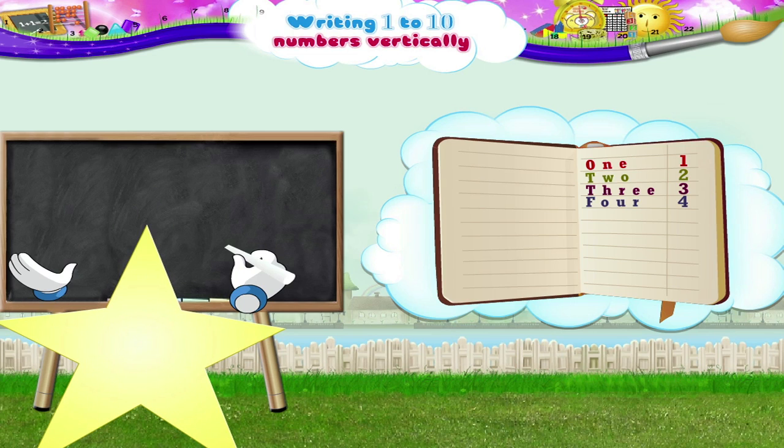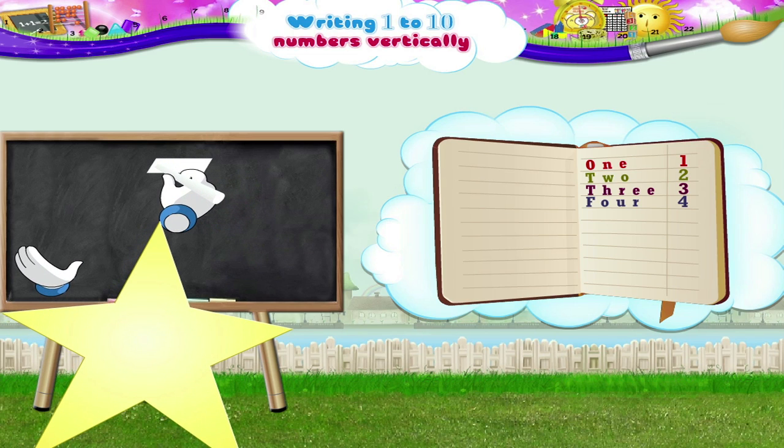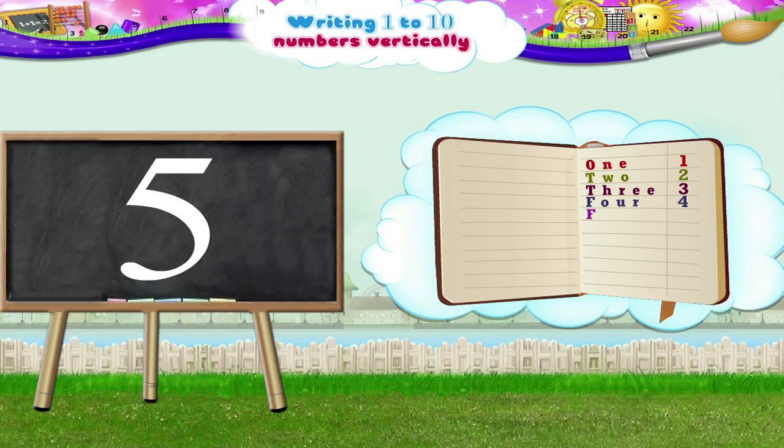And now, the number 5. We first move in a straight line from right to left, then down and then clockwise around. F-I-V-E, the number 5.